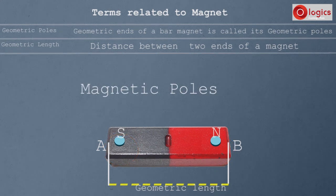These poles are situated slightly inside the magnet. At these points, most magnetic power is concentrated.